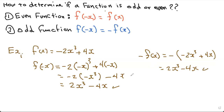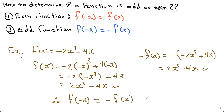Now let's compare all three functions: f of x, f of negative x, and negative f of x. We notice that f of negative x and negative f of x ended up giving the same equation. Therefore, f of negative x equals negative f of x exactly, which means this function follows the odd function rule — so this function is odd.